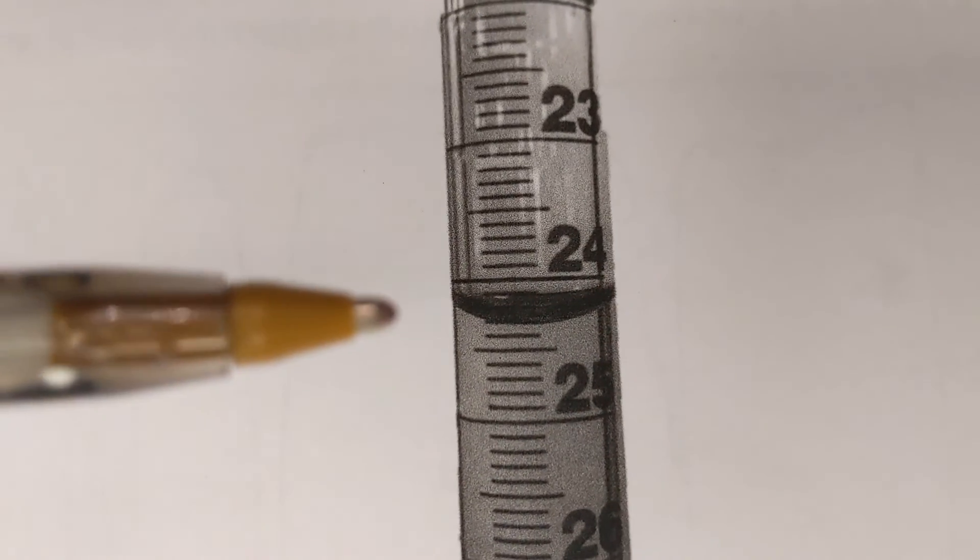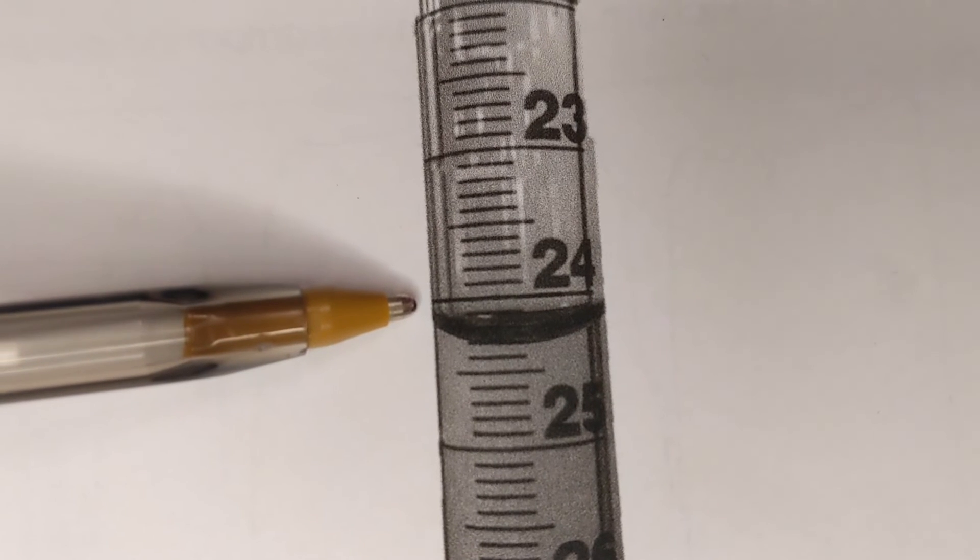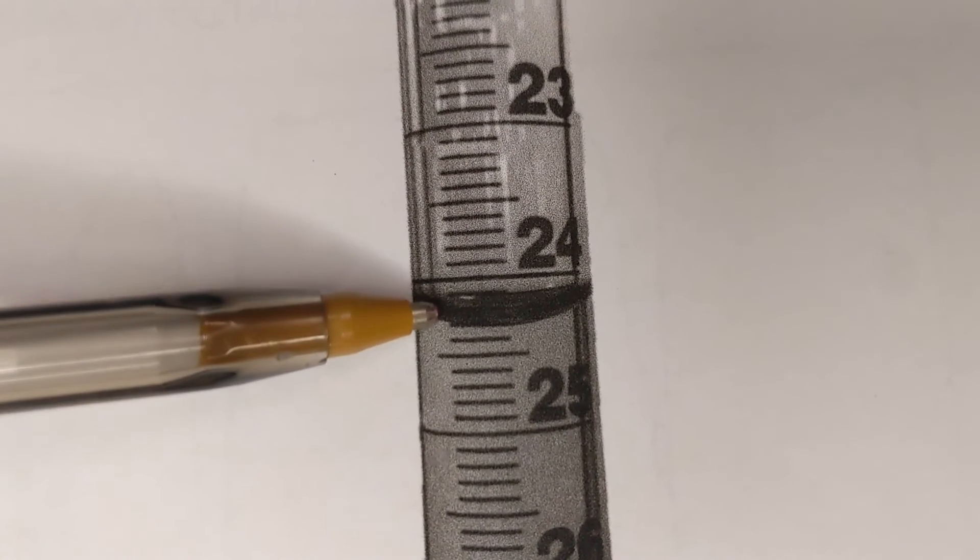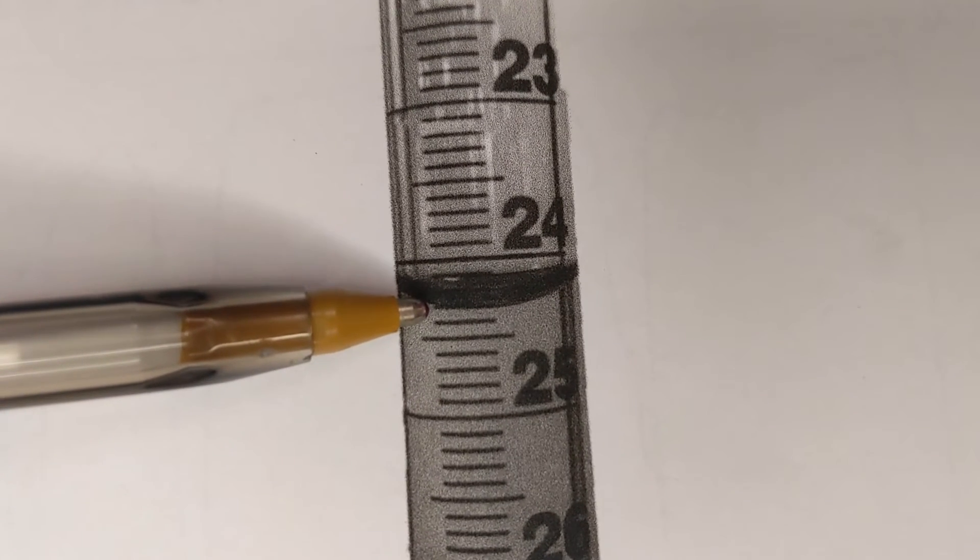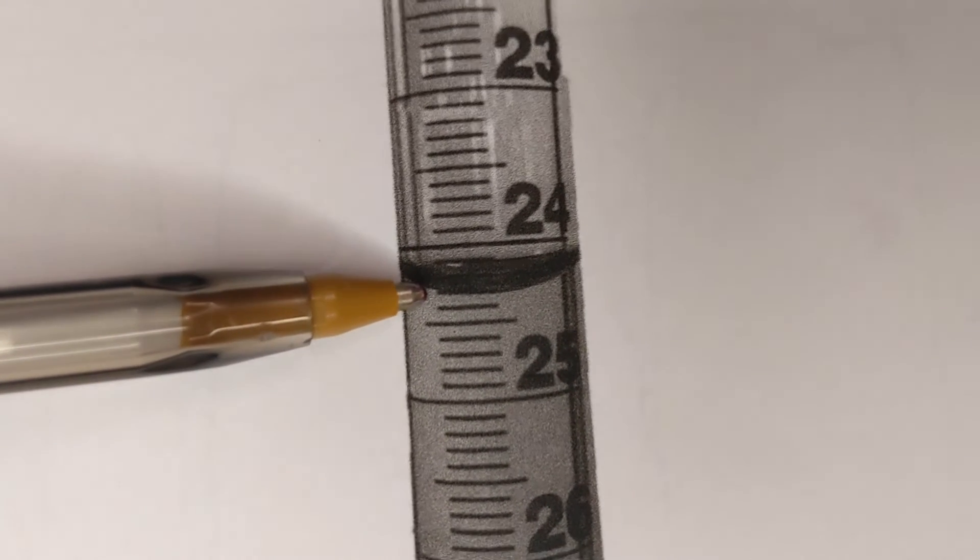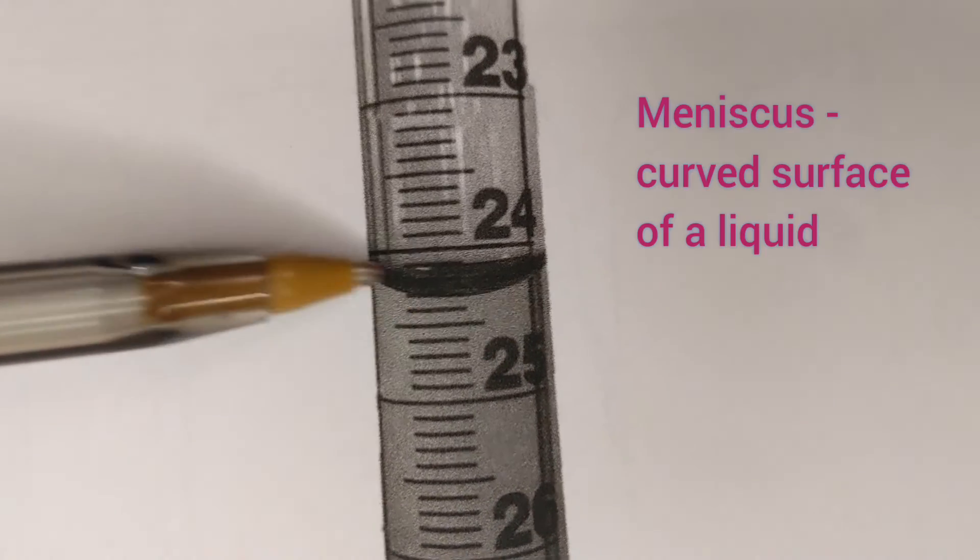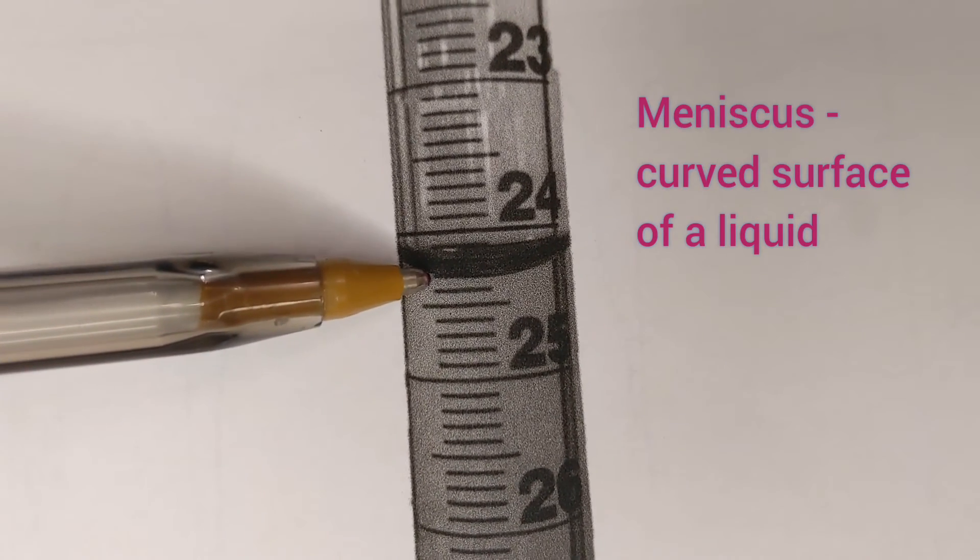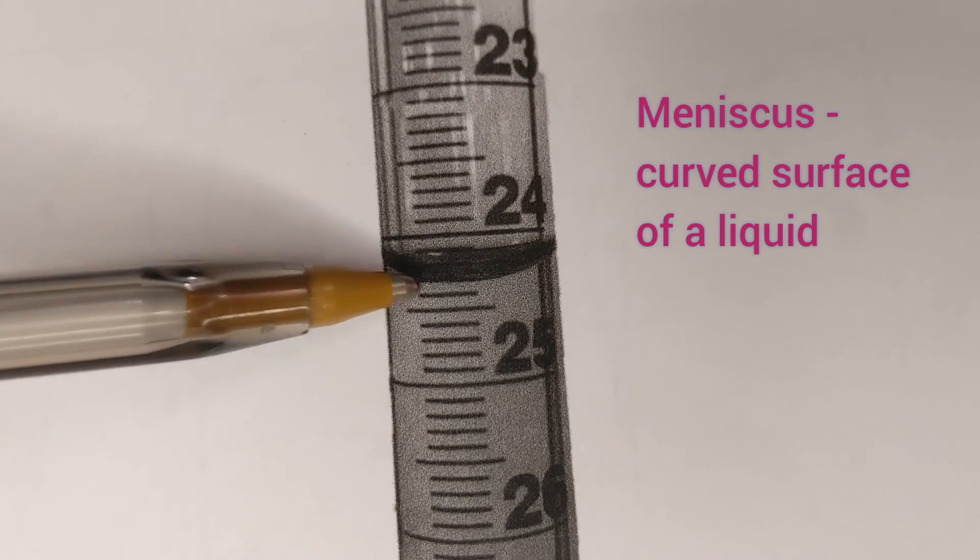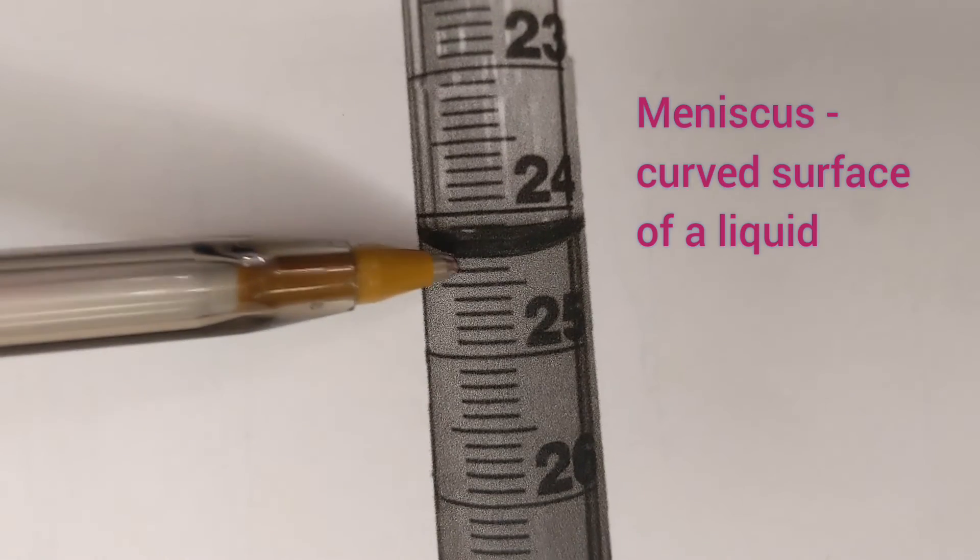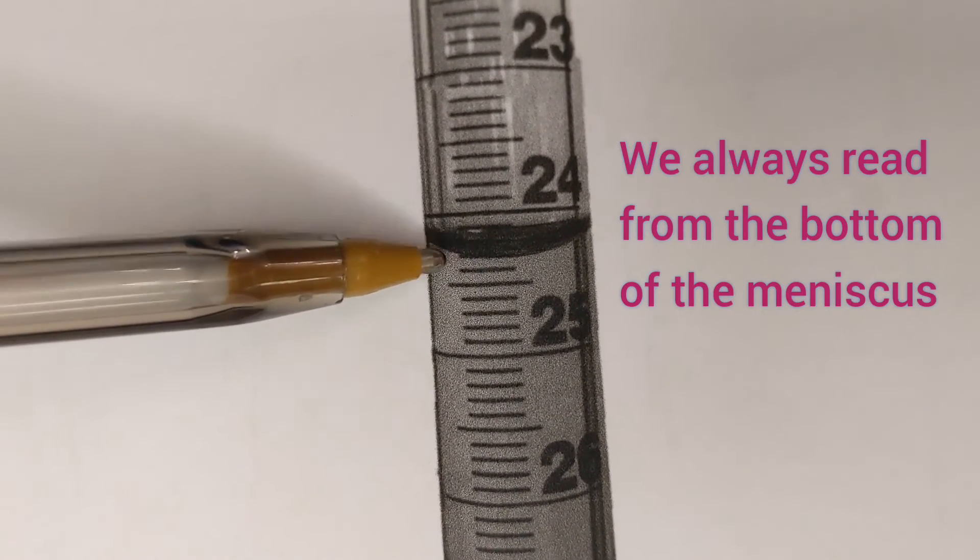So we've got 24.00, 24.10, 20, 30 and we read from the bottom of the meniscus and a meniscus is just a curve, the curve of the liquid and this forms due to surface tension and I'll put a bit of information about that in the description below.